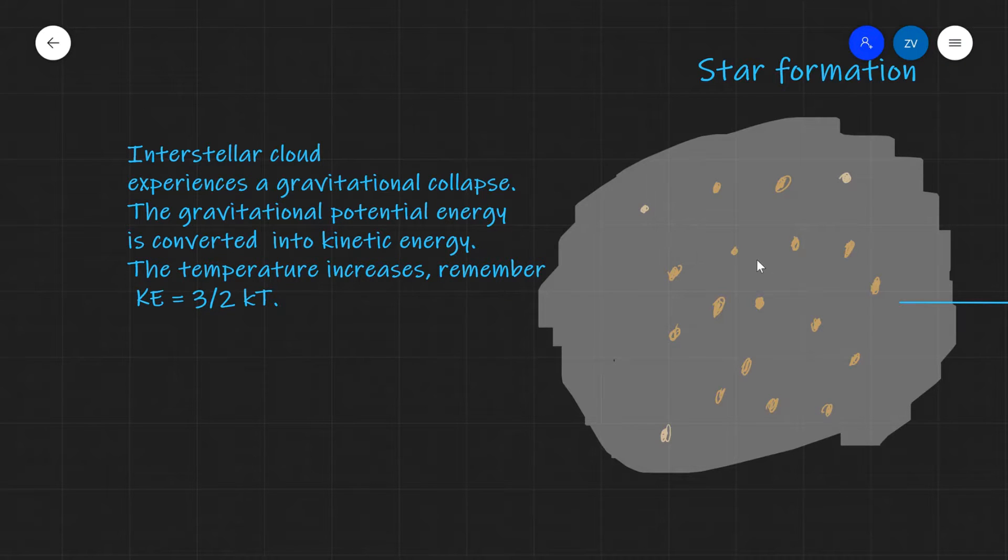If we imagine a little interstellar cloud mostly consisting of hydrogen, it will start experiencing a gravitational collapse. This means that all of those particles are going to be attracted towards the gravitational center of this interstellar cloud.